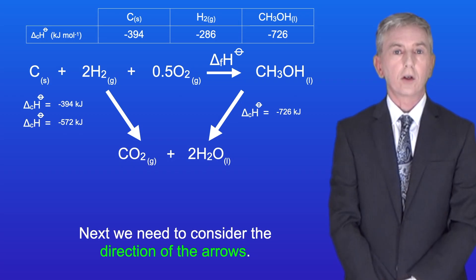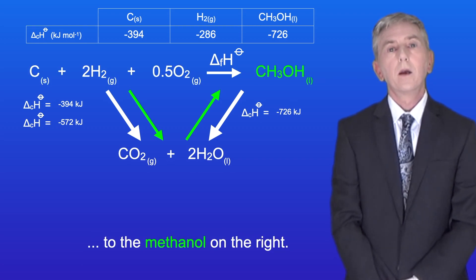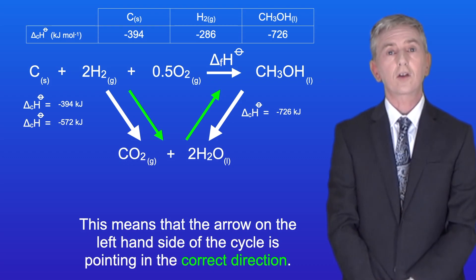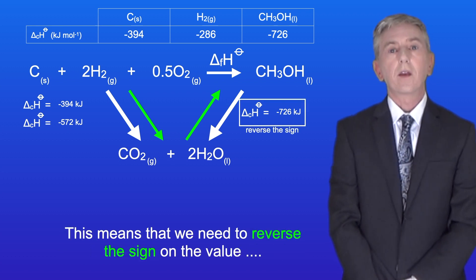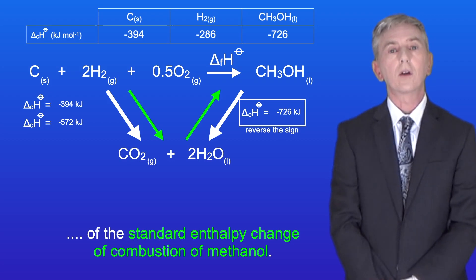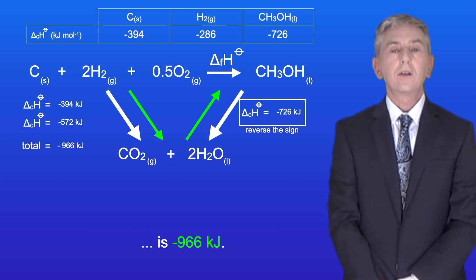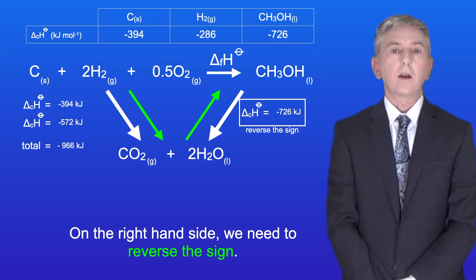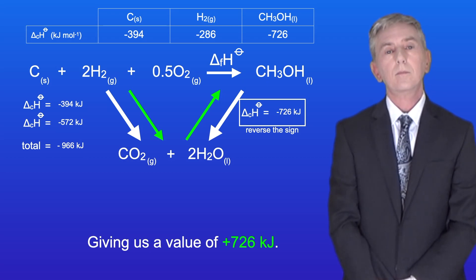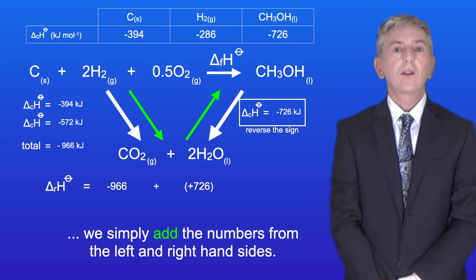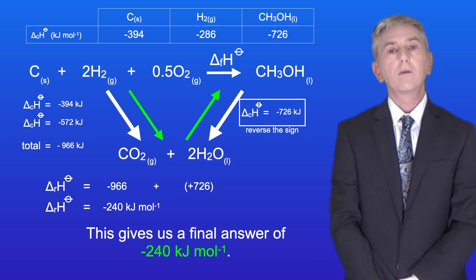Next we need to consider the direction of the arrows. We're going from the carbon, hydrogen and oxygen on the left to the methanol on the right. This means that the arrow on the left hand side of the cycle is pointing in the correct direction. However the arrow on the right hand side is pointing in the wrong direction, so we need to reverse the sign on the value of the standard enthalpy change of combustion of methanol. The total enthalpy change of combustion on the left hand side is minus 966 kilojoules. On the right hand side we need to reverse the sign, giving us a value of plus 726 kilojoules. To calculate the standard enthalpy change of formation of methanol we simply add the numbers from the left and right hand sides. This gives us a final answer of minus 240 kilojoules per mole.